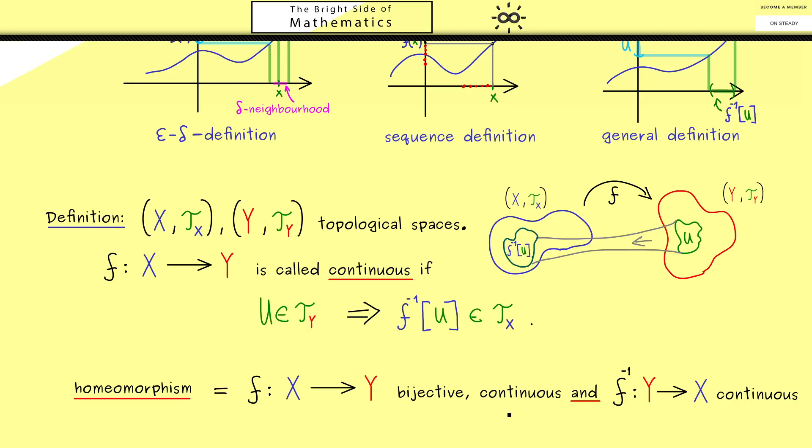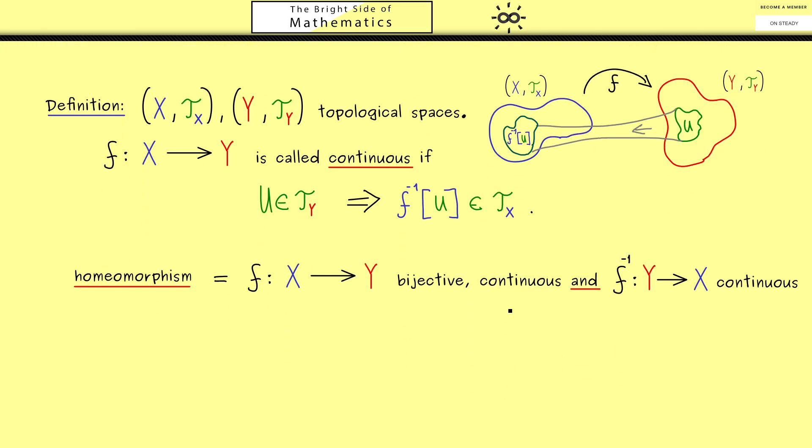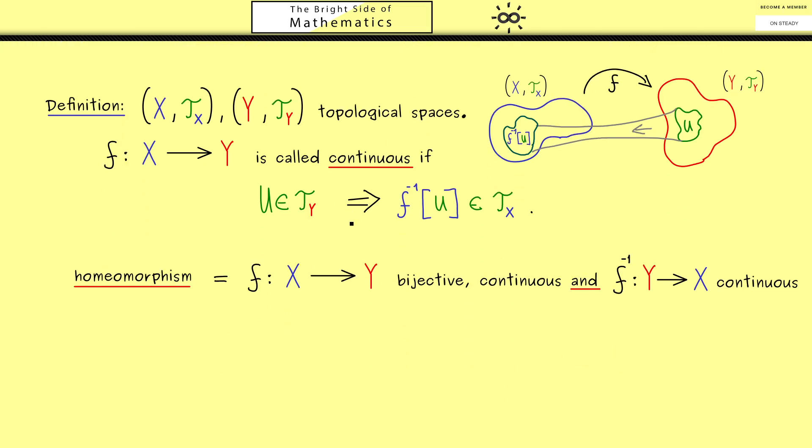Okay then I would say let's look at some simple examples of such continuous maps. They are simple but they are also important to know. The first one comes in when we take the indiscrete topology on Y.